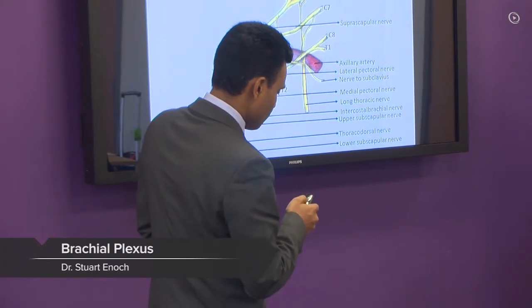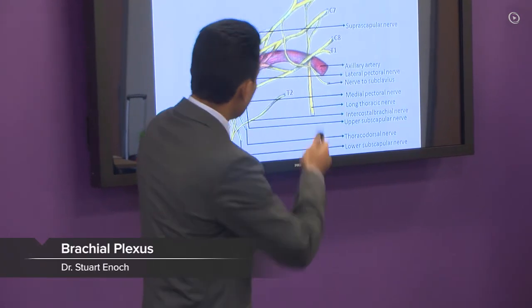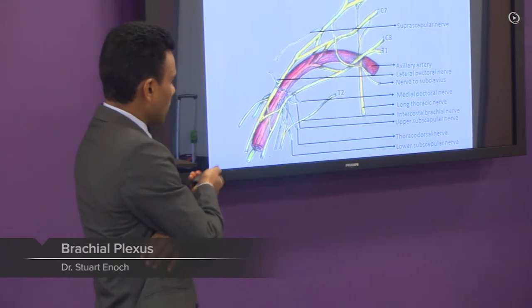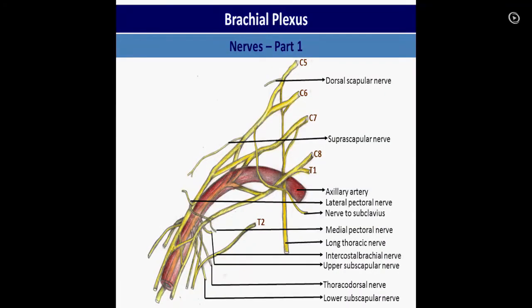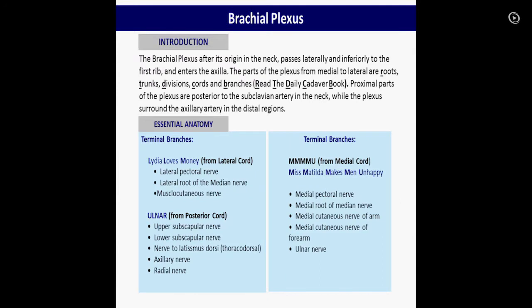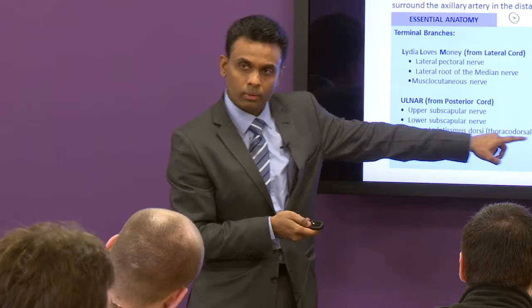Brachial plexus — you can get this in any book, so that's why I didn't go through this, but when you're revising you'll be able to get all this information. For the axillary artery: what is on the lateral side, what is on the medial side? Branches of the lateral cord, posterior cord, branches of the medial cord.